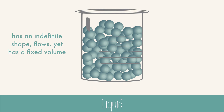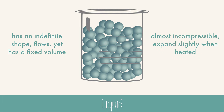A liquid has an indefinite shape, can flow, but has a fixed volume. Because liquids can flow, they fill the shape of their container but maintain the same volume. The particles of a liquid move faster than those of a solid, and there is some space between the particles. This bit of empty space between particles means that liquids are very slightly compressible, but if you add heat, the liquid will expand slightly from the increased movement of the particles.